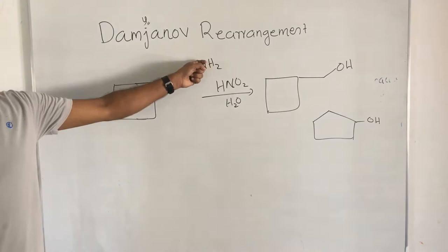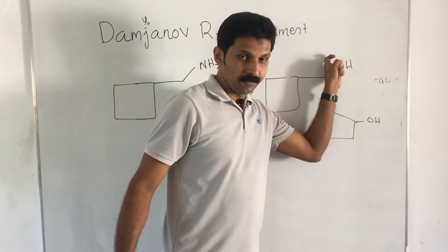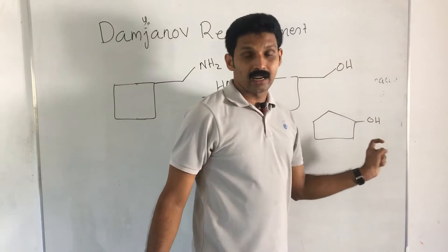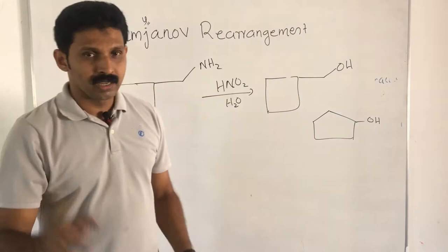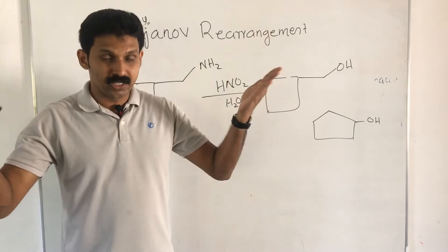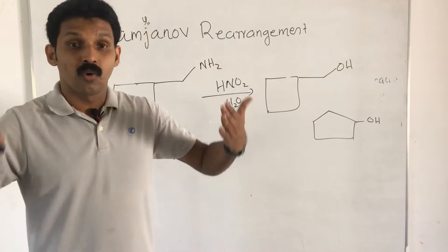One product is a simple substitution of the NH2 group by an OH group. Another product involves a ring-expanded alcohol — a rearranged alcohol. Therefore, Demjanov rearrangement is a chemical reaction in which a primary amine treated with nitrous acid gives an alcohol, with the possibility of ring expansion or, in some cases, ring contraction.